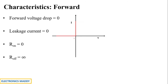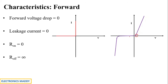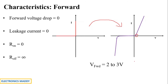Practically, the characteristics differ from ideal. For a normal diode, current begins to flow after the knee voltage is reached, and under reverse bias, beyond a certain point the current increases rapidly. The characteristics of a power diode are almost the same, but the forward voltage drop is 2 to 3 volts, whereas for a normal diode it is 0.7V or 0.3V depending on the material.